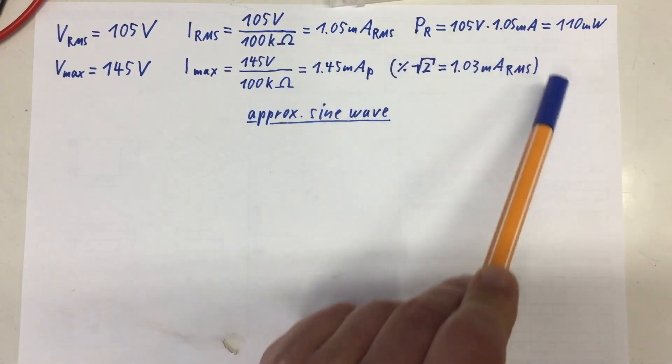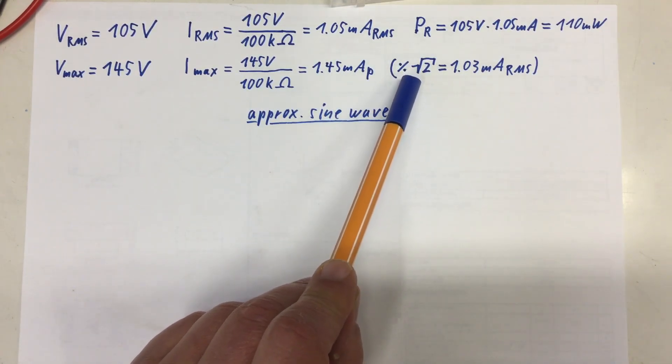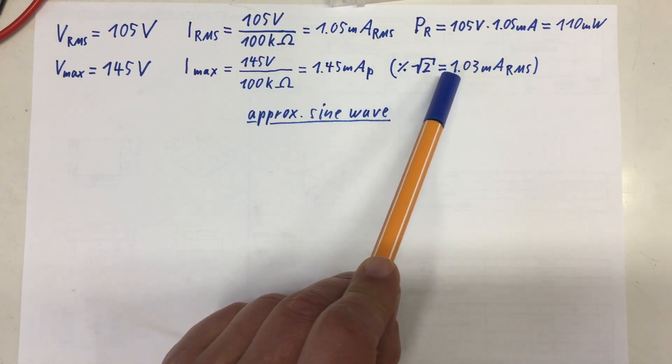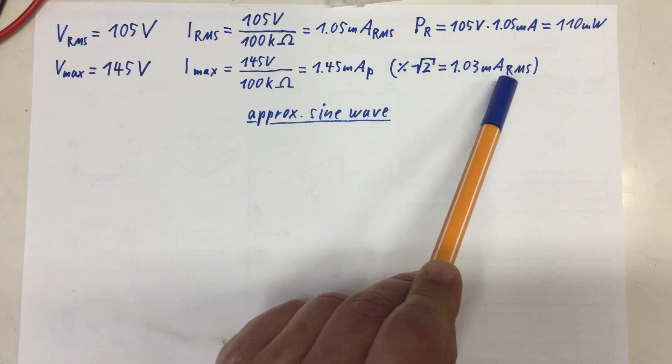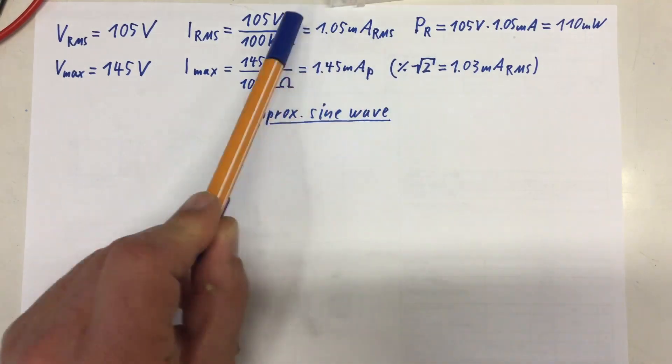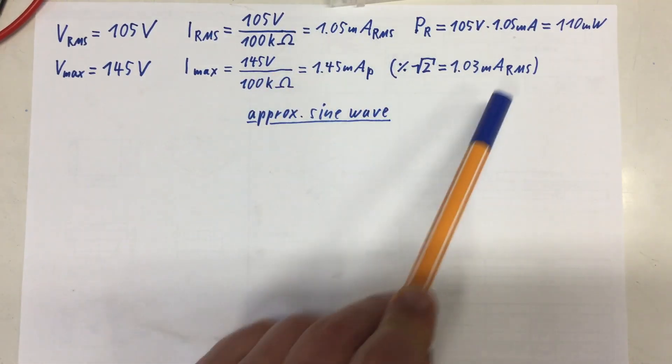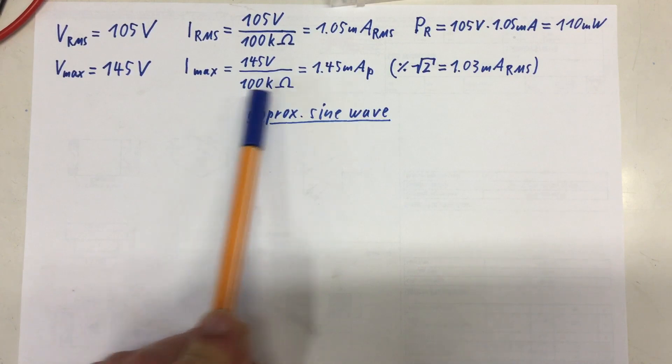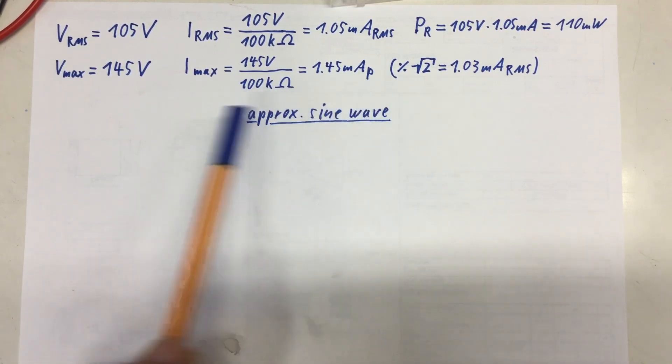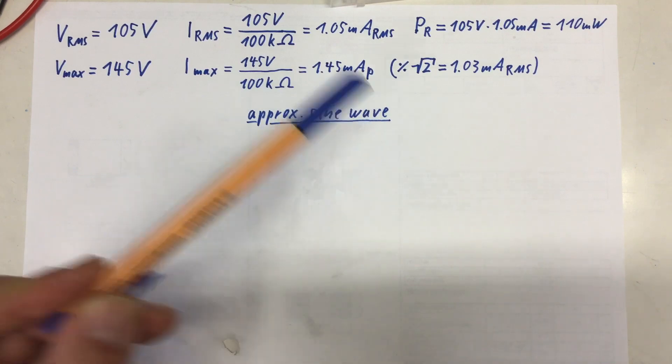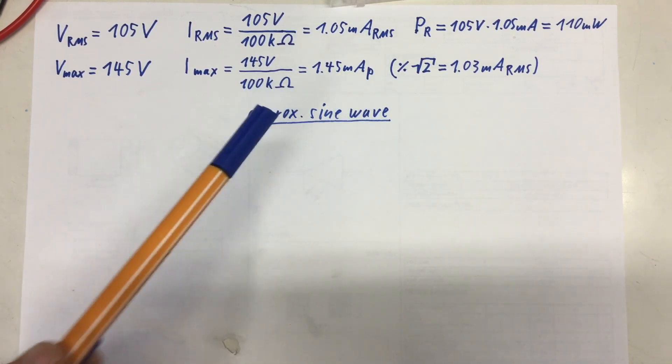Same calculation. So our peak current is 1.45 milliamps. And just to check, divide that by the square root of 2 gives 1.03 milliamps RMS, which is basically the same. So our calculations are sound. And the reason we can do this is because we are dealing with approximately sine waves here.